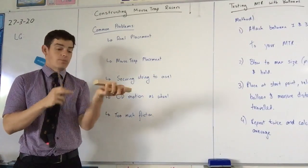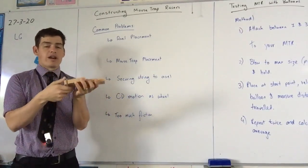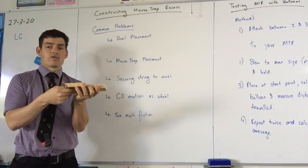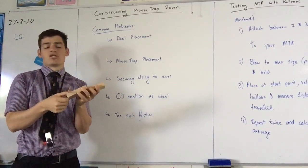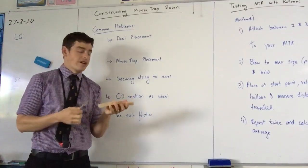If your mousetrap is on the top of this, if you put your axle on the bottom, you need to think about how can a string get to that and drive it forward. So you need to be really clear with where you're placing your axles.